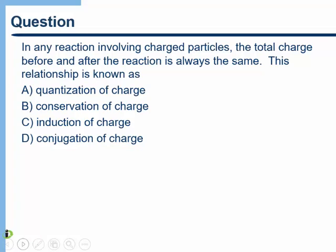In any reaction involving charged particles, the total charge before and after the reaction is always the same. This is conservation of charge. Even though we can create and destroy charges — as in pair production — if we create a positive charge, we must also create a negative charge so the total charge before and after any event stays the same.